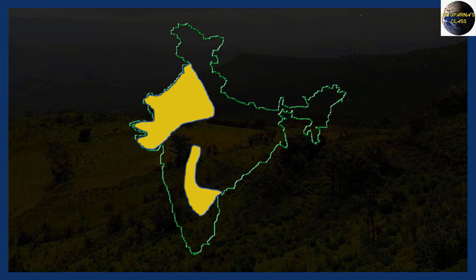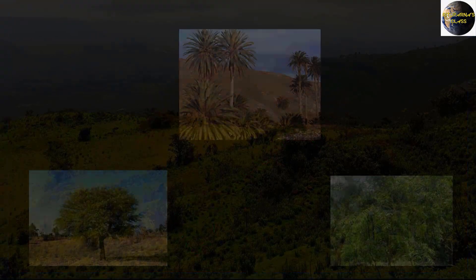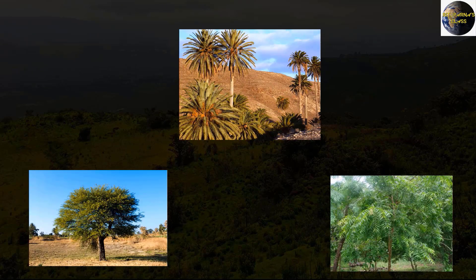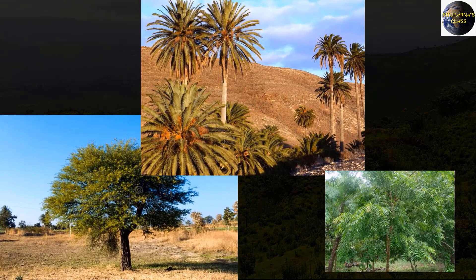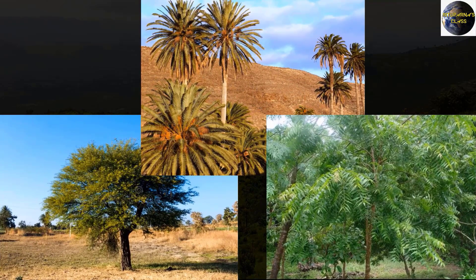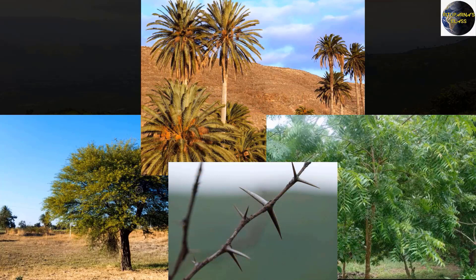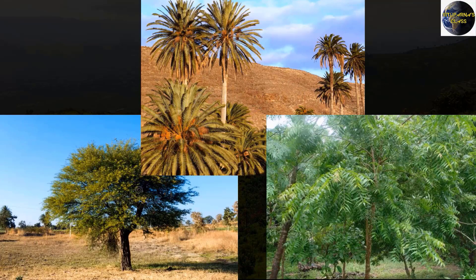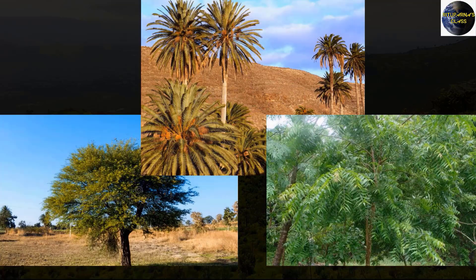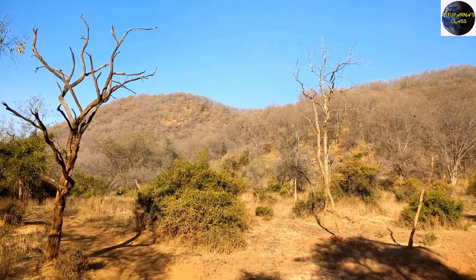Some common trees found in this forest are Babul, Wild Date Palm, and Neem. There is not much greenery, and the leaves are thorny in nature. The trees do have leaves, but they are few and very small in size, and the trees remain leafless for most part of the year. That's how it looks like a shrub vegetation.